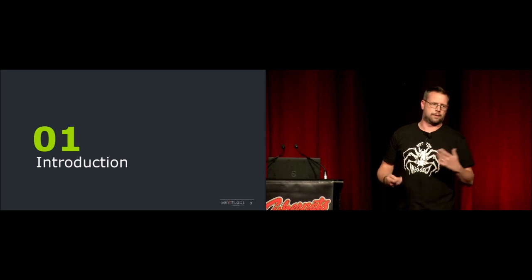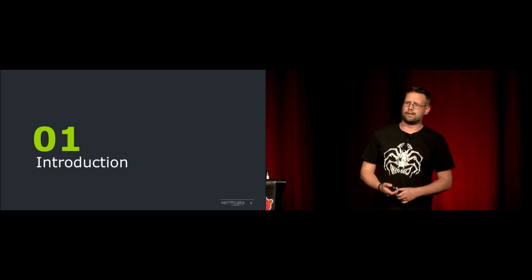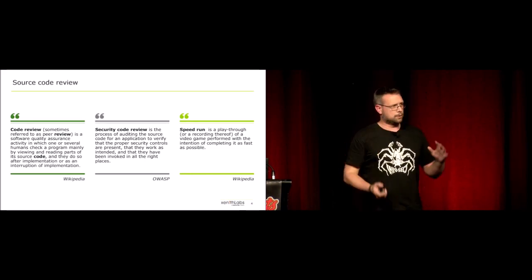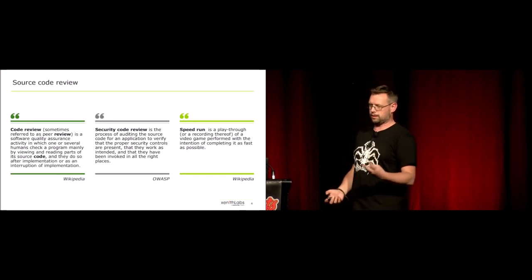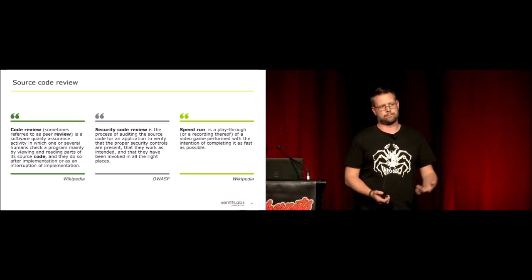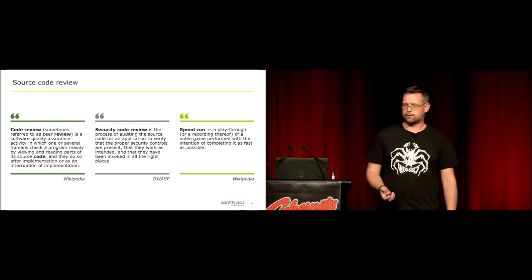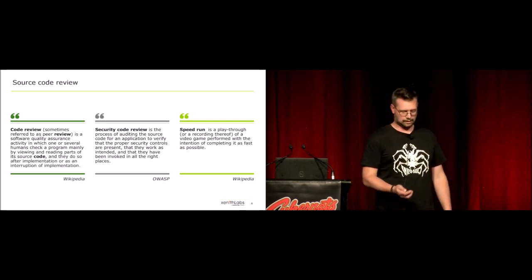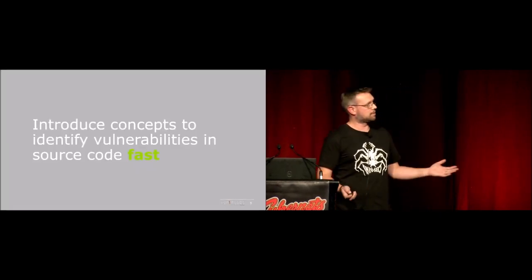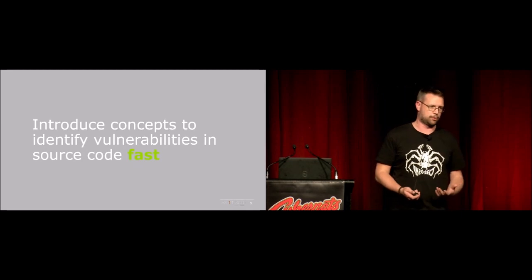We'll start with the introduction, a little bit about me, a little bit about source code auditing, talk a bit about theory, talk a bit about vulnerabilities, and eventually get on to actually auditing. We're encompassing three things here: first being traditional code review — looking at the code, identifying what it does, making sure it meets the required standard. Source code review is the same thing but looking for vulnerabilities. And I decided that trying to do it fast would be good. Essentially I'm looking at a way to transfer some knowledge on how you can identify vulnerabilities in source code fast.